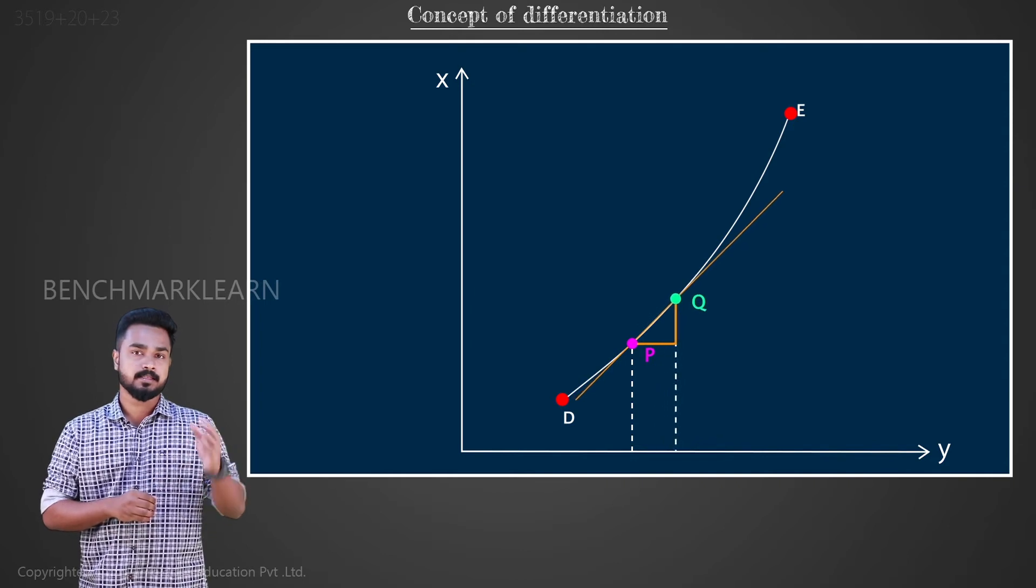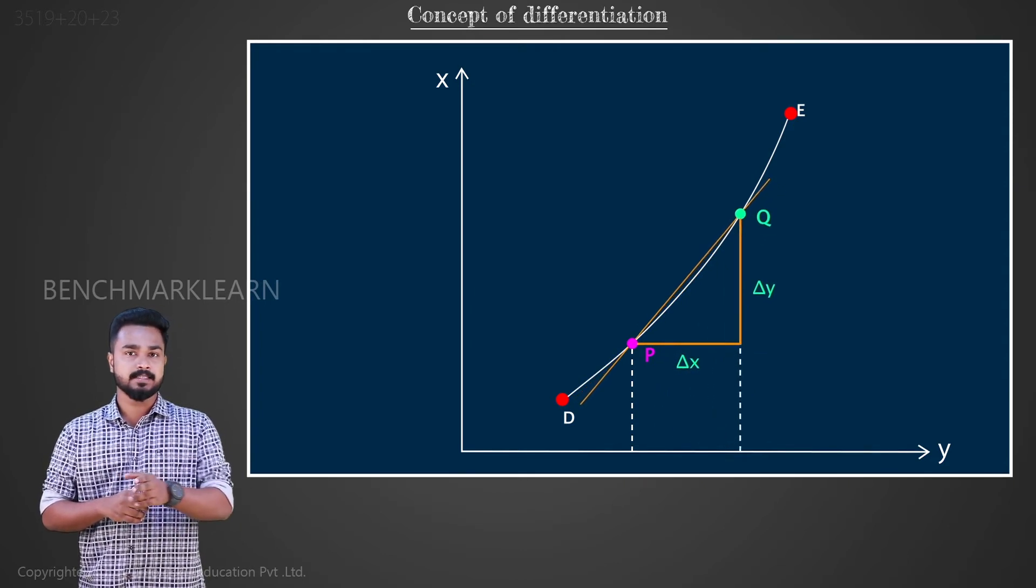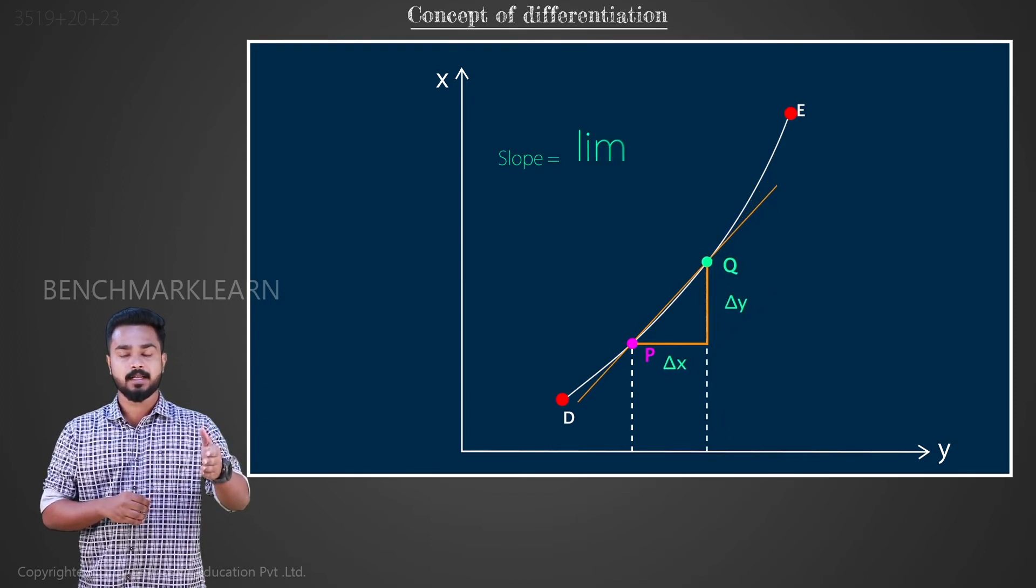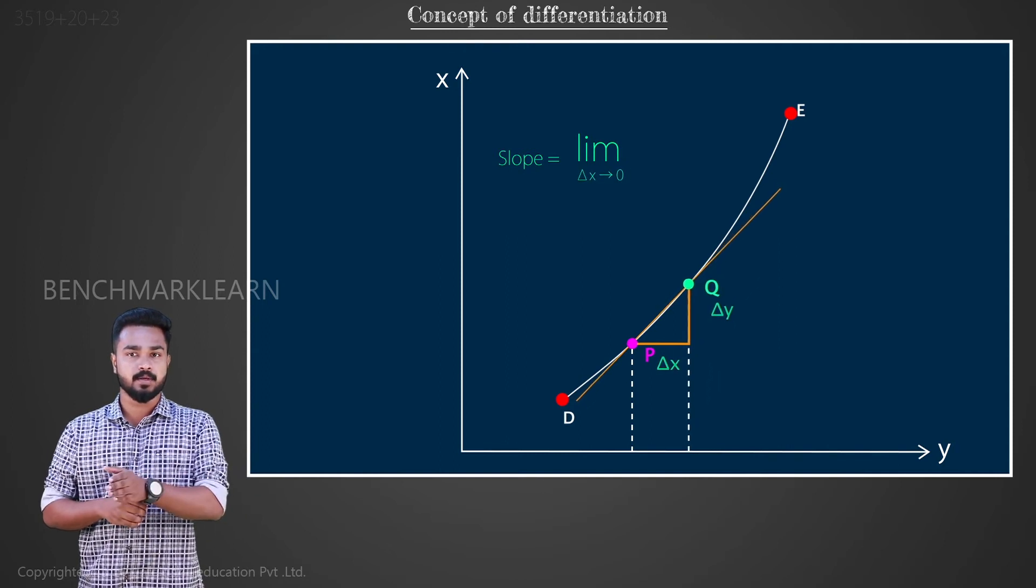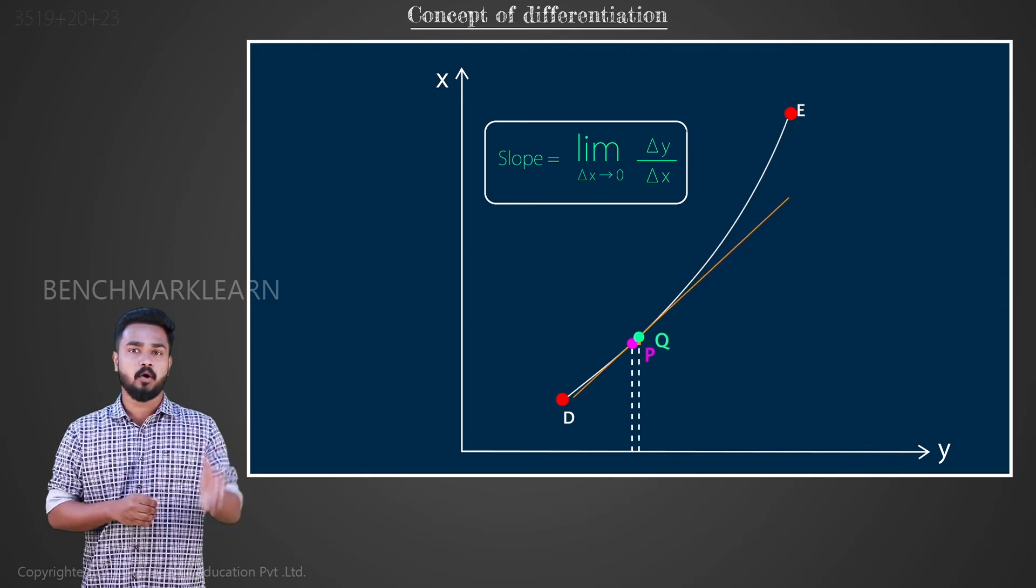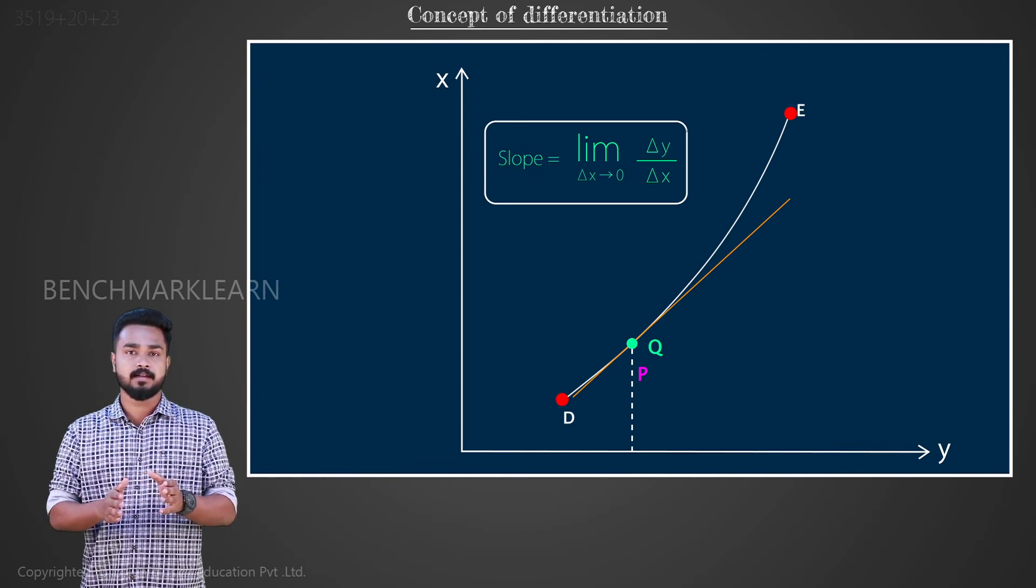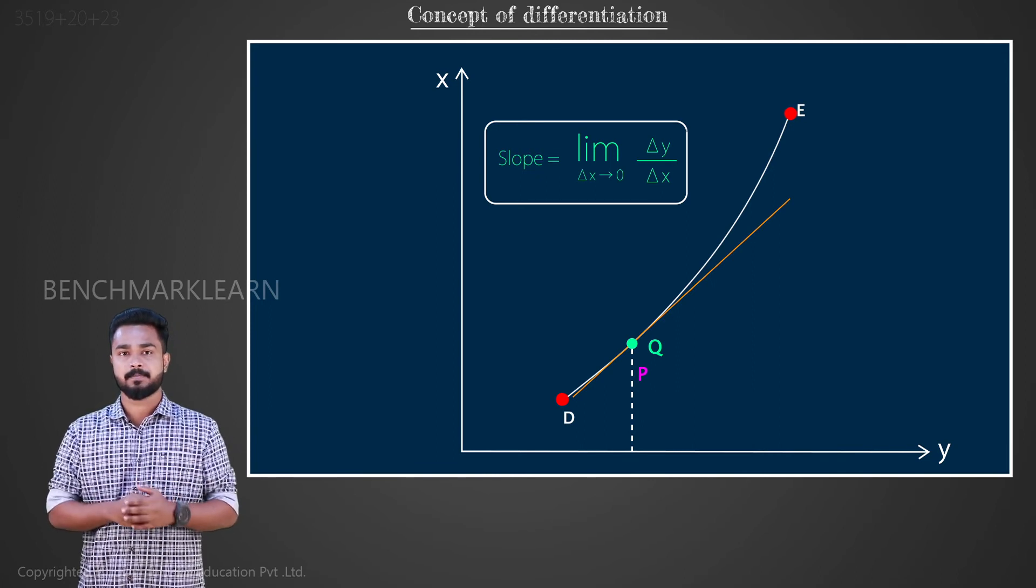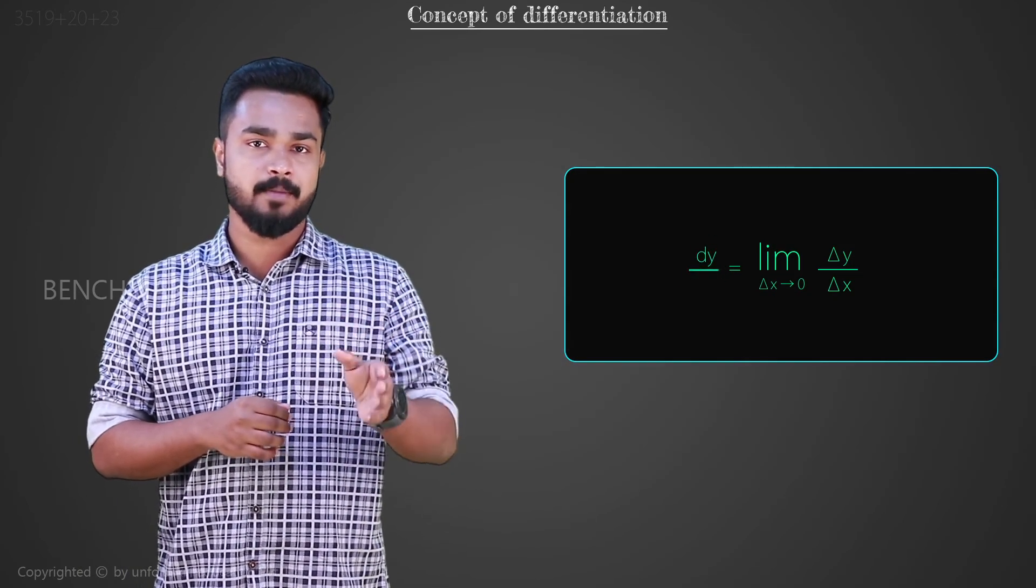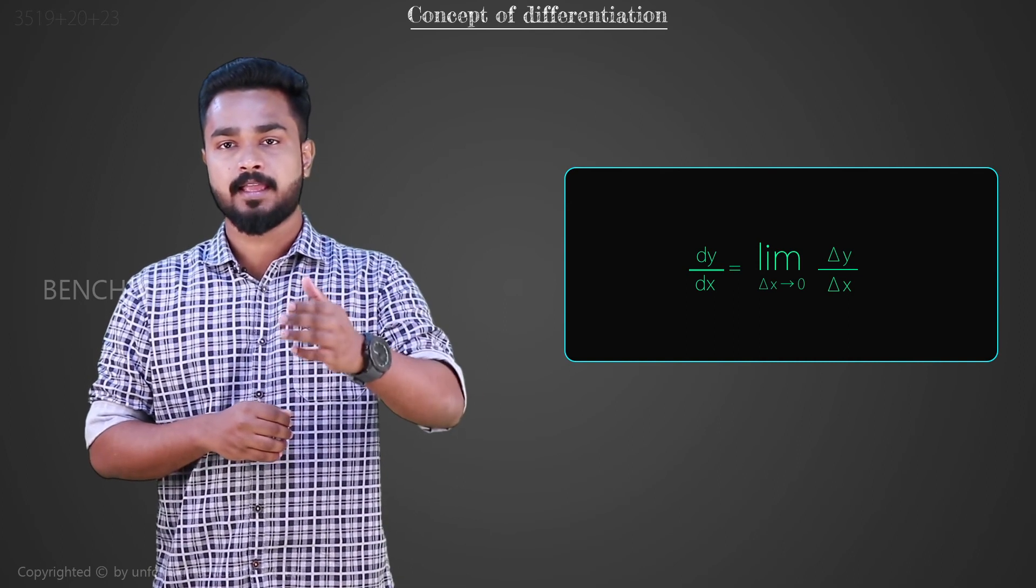Mathematically, the slope Δy by Δx when Δx becomes closer and closer to 0 can be given as limit Δx tending to 0 Δy by Δx. This slope for a small change in variable is called the derivative and the process of finding it is called differentiation. The derivative can be given as dy by dx equals limit Δx tending to 0 Δy by Δx.